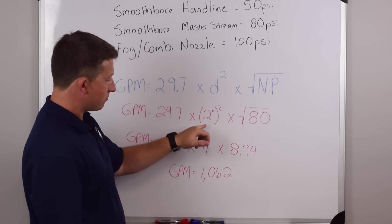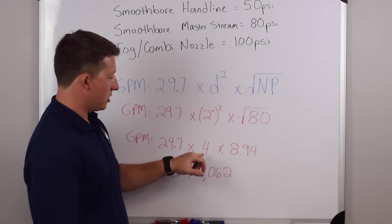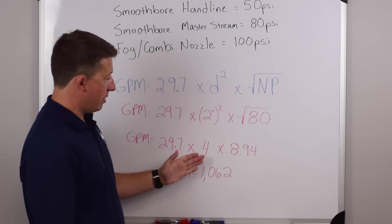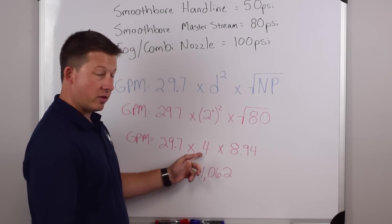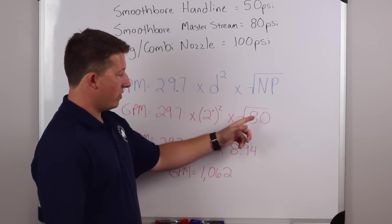Two inch squared is going to be four. That's where our diameter of our nozzle is how we get that in the formula. The square root of 80, which is the nozzle pressure that this nozzle operates at, is going to be 8.94.